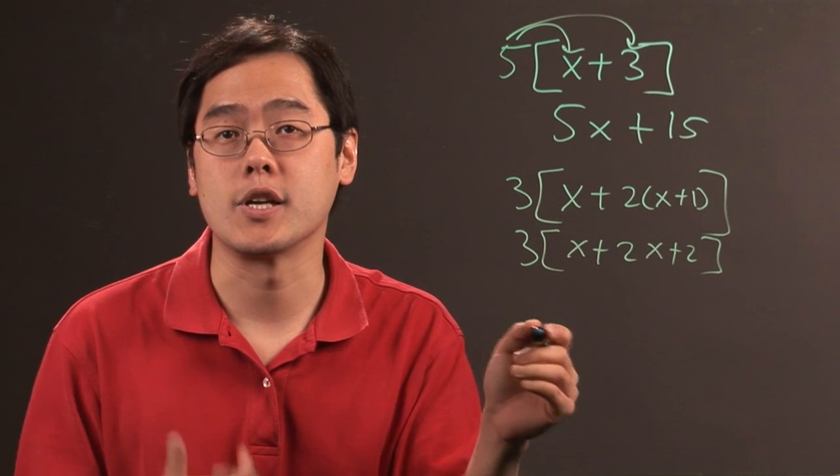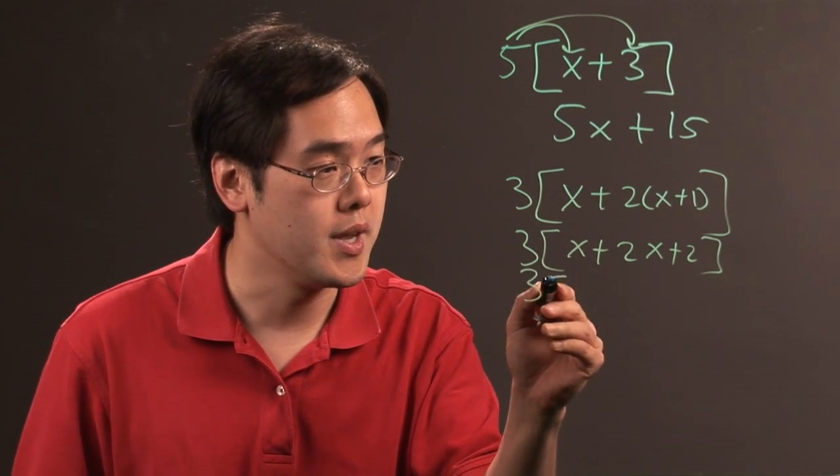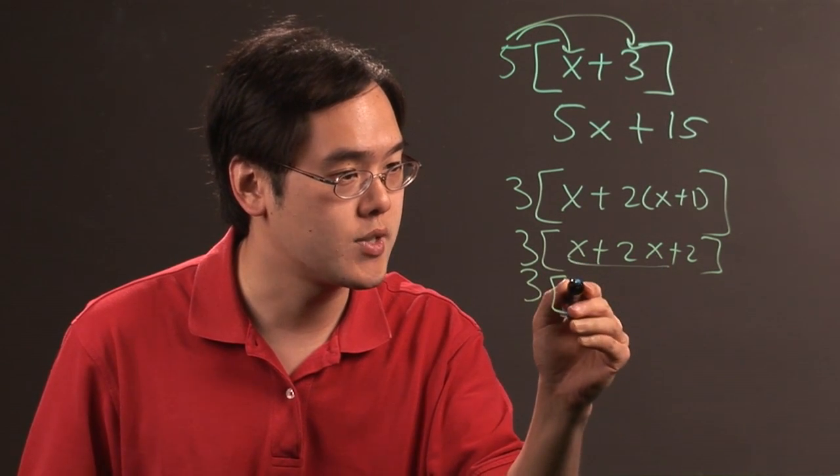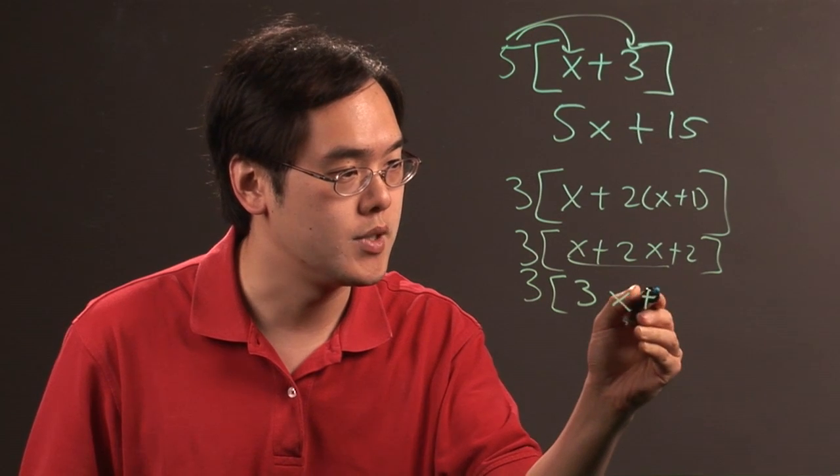And then if you like, you can simplify the expressions within the brackets. 3 bracket x plus 2x, that's going to give you 3x plus 2.